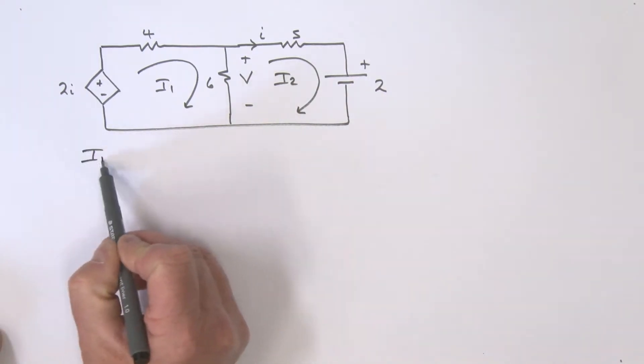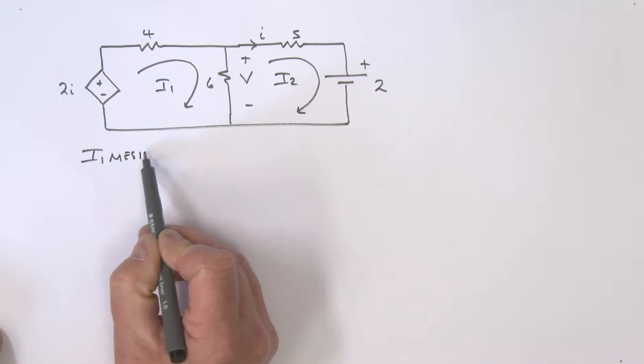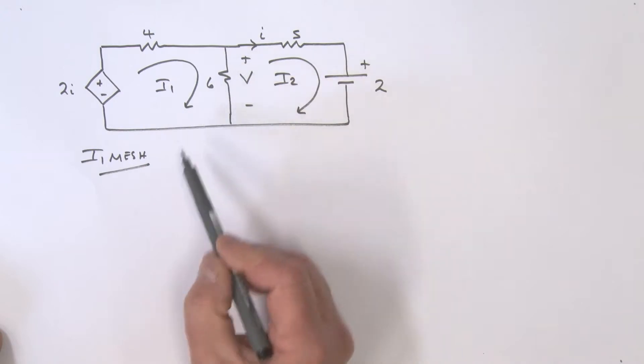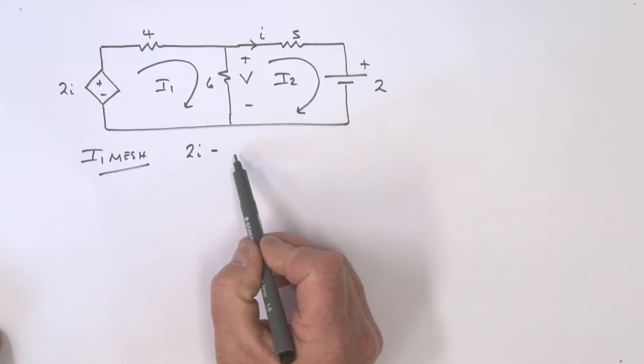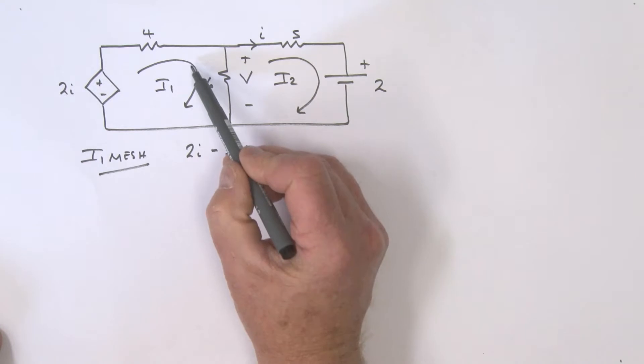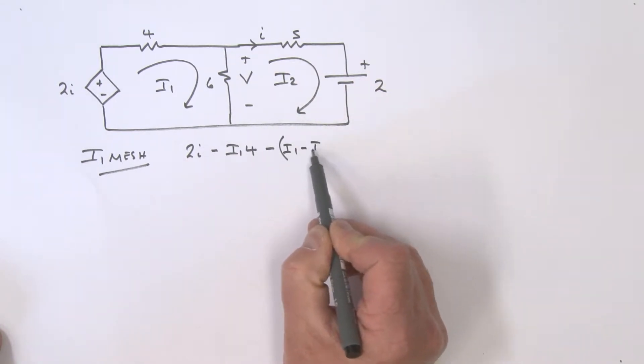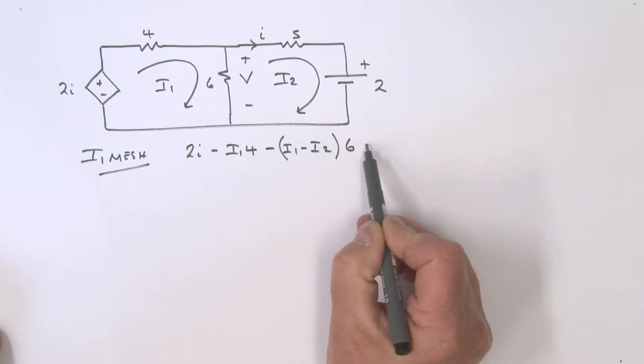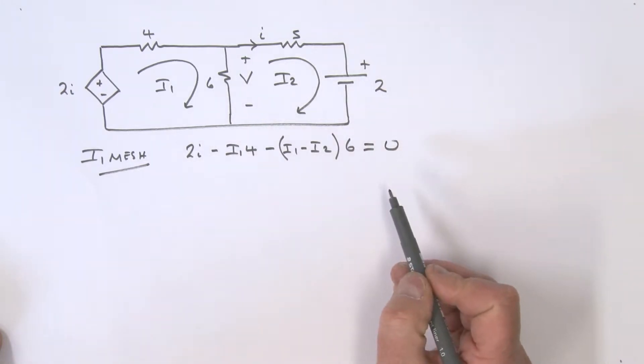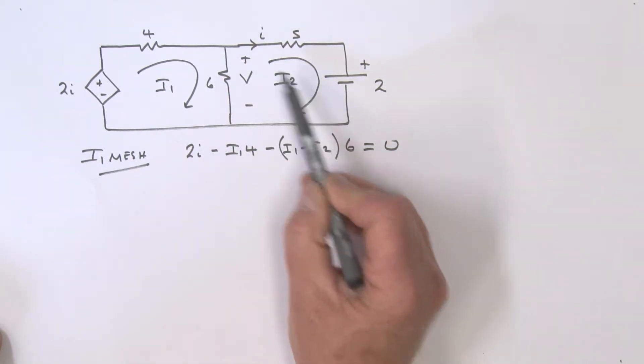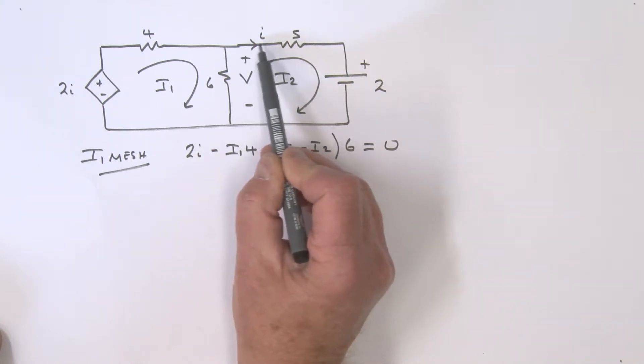Let's have a look at the I1 mesh. Going around in this direction, what do we have? We have 2i, we have a minus I1 times 4, and then we have a minus, open the bracket, this will be I1 minus I2, and that's times 6, and all of that is equal to zero. Let's note here that I2 over here is the same as this little i current here, so little i is the same as I2.